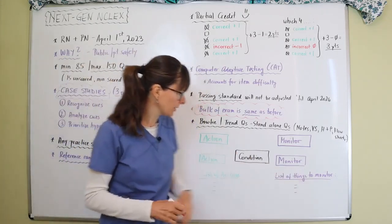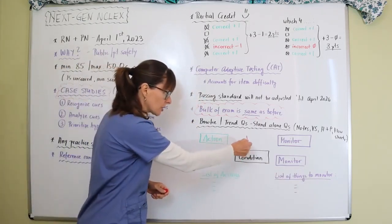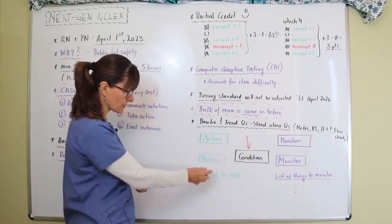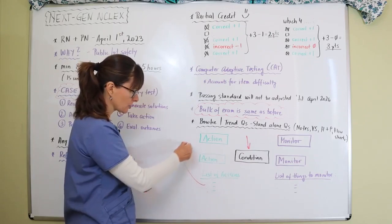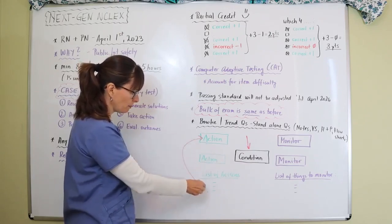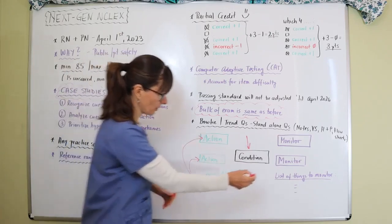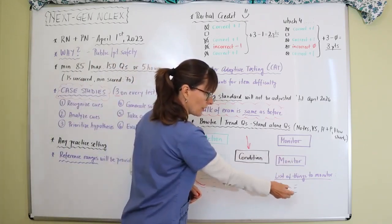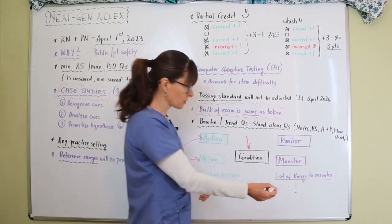And then you have a list of actions and a list of things to monitor. And from based on the condition that you're looking at, you're going to look at the list of actions, and whichever action applies, you're going to put in this bow tie form here.